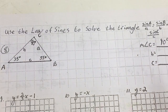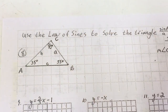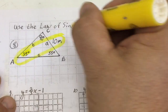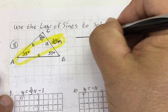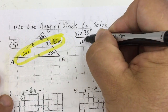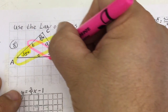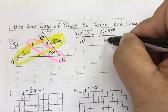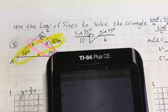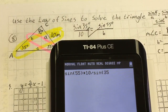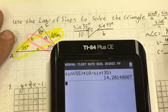To find side b: sine of A over a equals sine of B over b. The values are 10 and 35, so sine of 35 degrees over 10 equals sine of 55 degrees over b. I do cross multiplication: sine of 55 degrees times 10 divided by sine of 35 degrees. That gives me 14.28, or just 14.3.